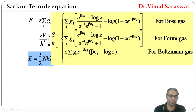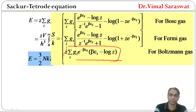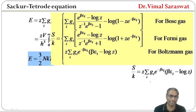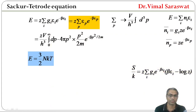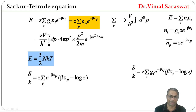For different gases, S/k takes different forms. For Boltzmann gas, S/k = Z · Σi Gi · e^(-βEi) · (βEi − log Z), where Z here is the fugacity and β = 1/kT. In terms of p, S/k = Z · Σp e^(-βEp) · (βEp − log Z).